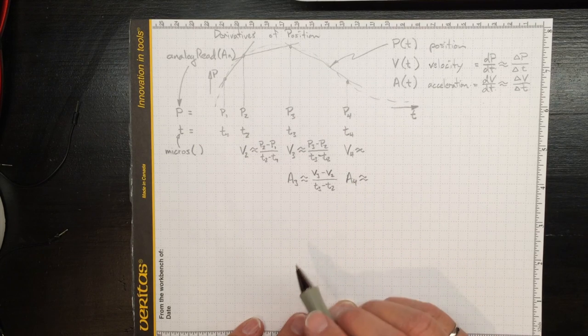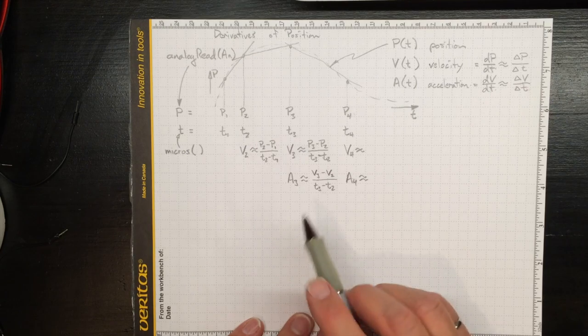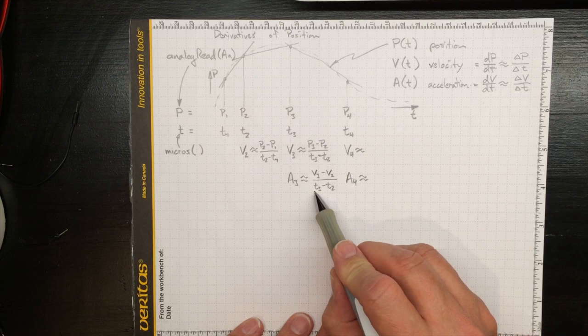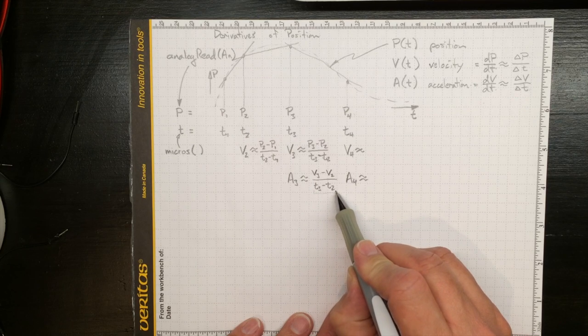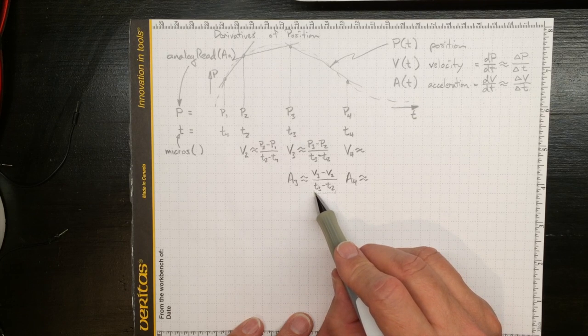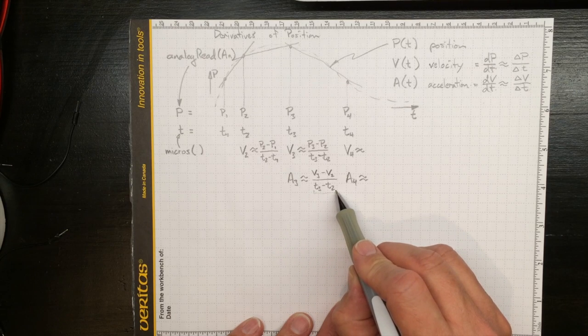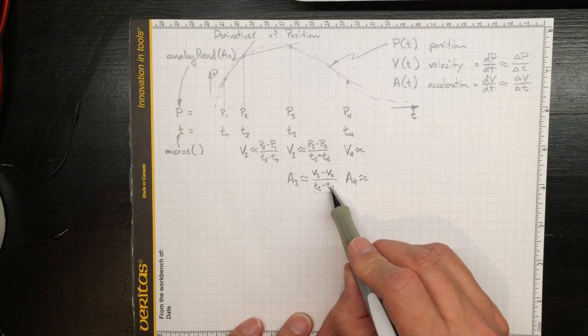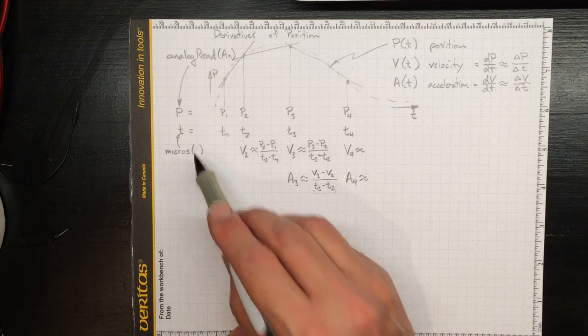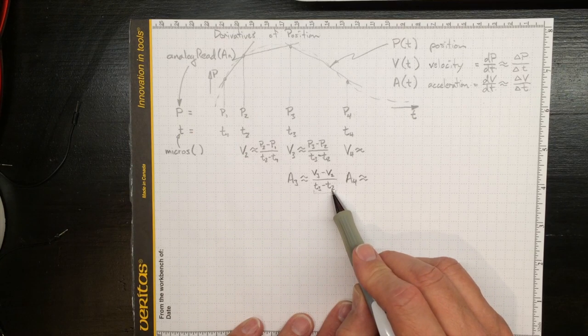Except, and there's always a catch, the closer we push these together in time, the less certain we are how much time has actually gone by. In fact, in the extreme, if they got to be inside 4 microseconds of each other, we really don't know what we'd get here. We might sometimes get the same value back from micros. So our time is going to be uncertain.